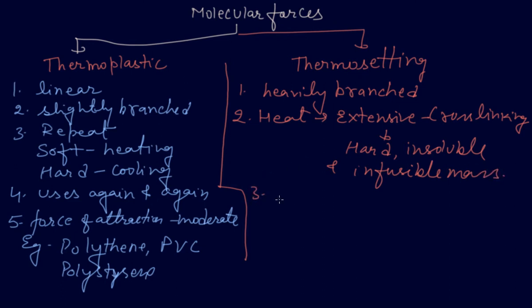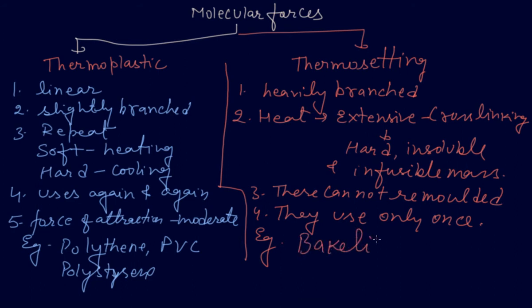These thermosetting polymers cannot be remolded. They use only once and after that they will break down. Examples are Bakelite, like the handle of a cooker. Once they break down they cannot be used again. Another example is urea-formaldehyde resins.